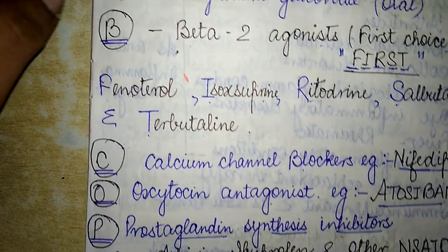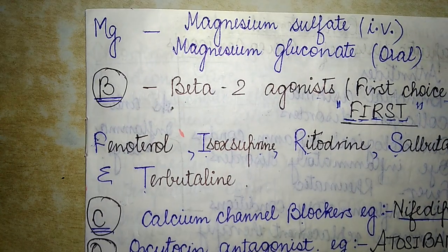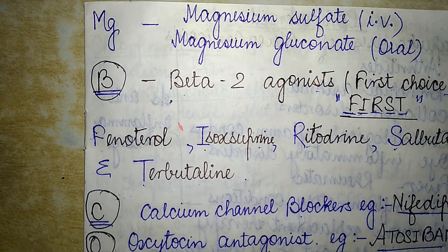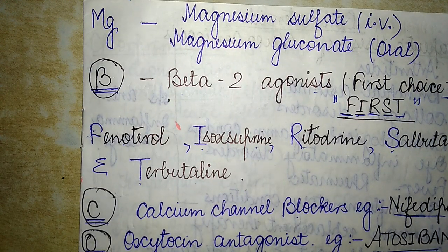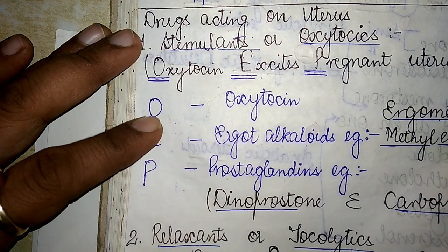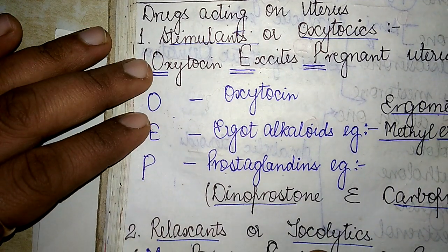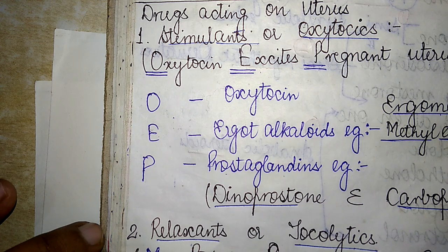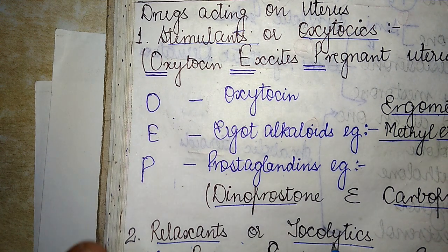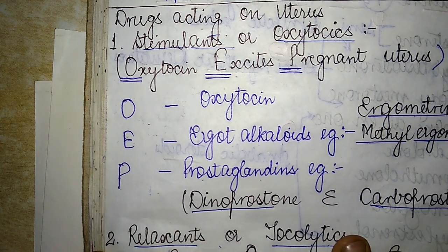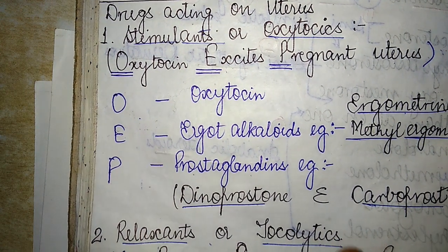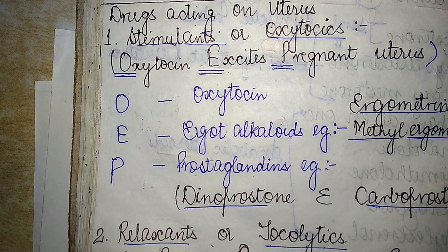Common examples of prostaglandin synthesis inhibitors include Aspirin, Ibuprofen, and other NSAIDs. So this was my mnemonic or short trick for easily remembering the drugs acting on the uterus in two broad classes: the stimulants or oxytocics, and the relaxants or tocolytics.